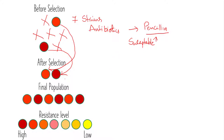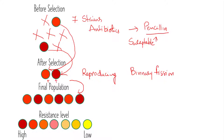By the process of selection, the resistant varieties of bacteria have been selected. These selected bacteria will start reproducing by binary fission and they have started growing their population. Among the seven bacteria, only these two strains are selected by nature due to the presence of resistance towards the antibiotic. The resistance level gradually decreases from a high level to a low level. This is how natural selection is operating here.